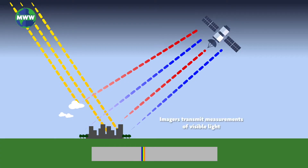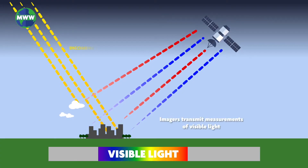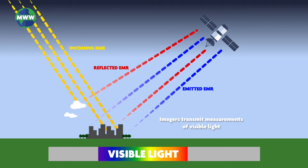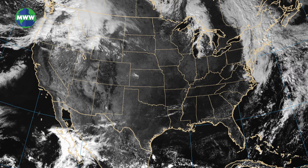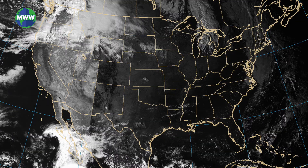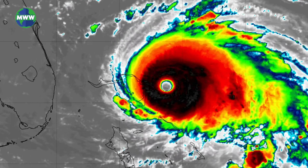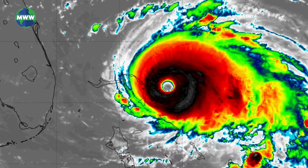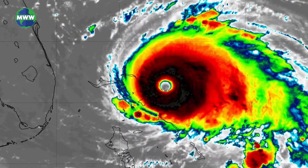Imagers transmit measurements of visible light from the sun reflected back to space by the surface or by clouds, and also the amount of radiation emitted from these entities. The data collected by imagers result in the visible and infrared images produced by computers, which are typically loops showing the movement of a storm.